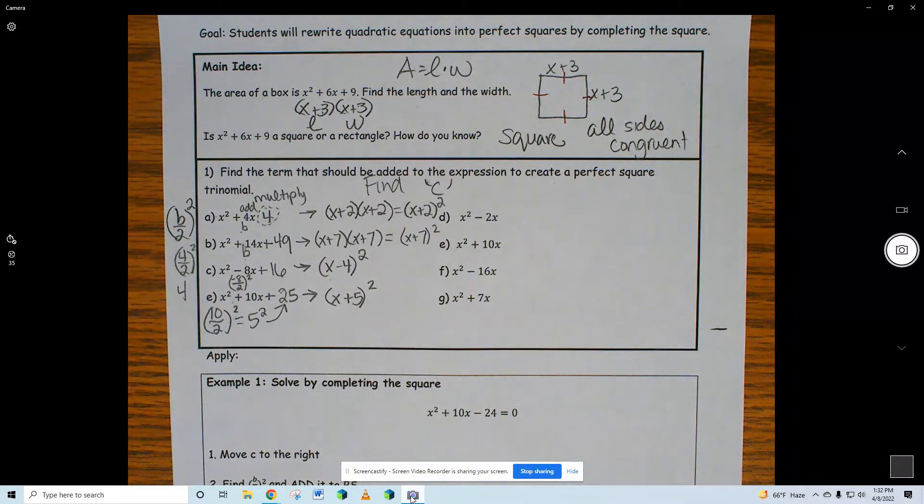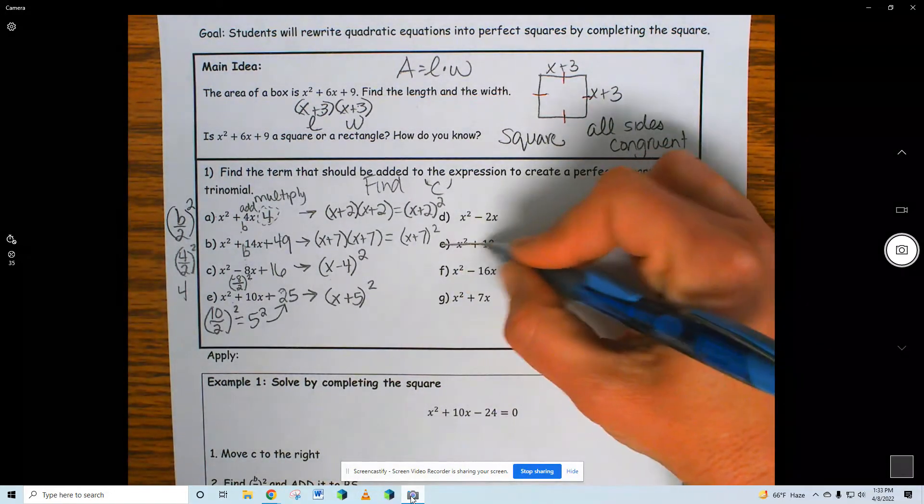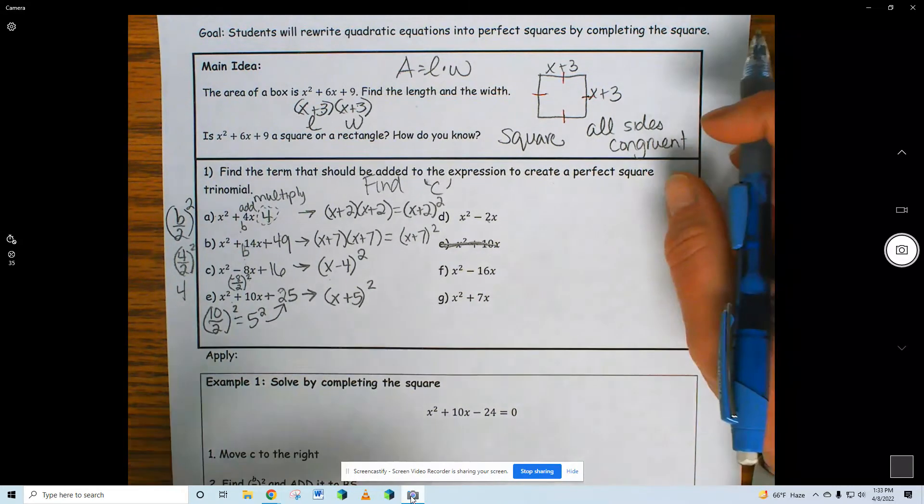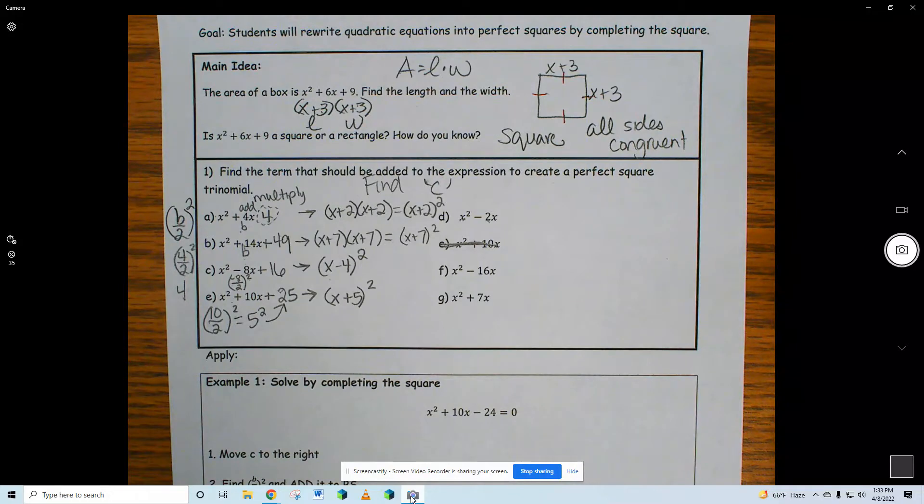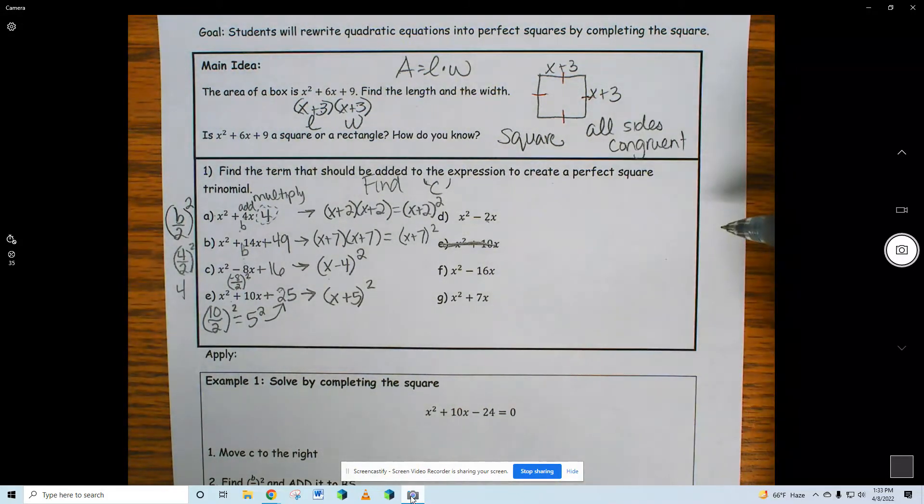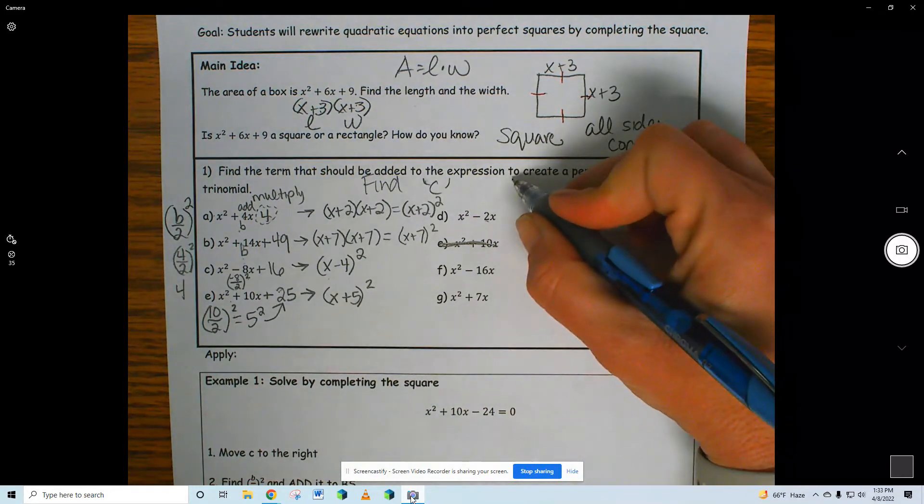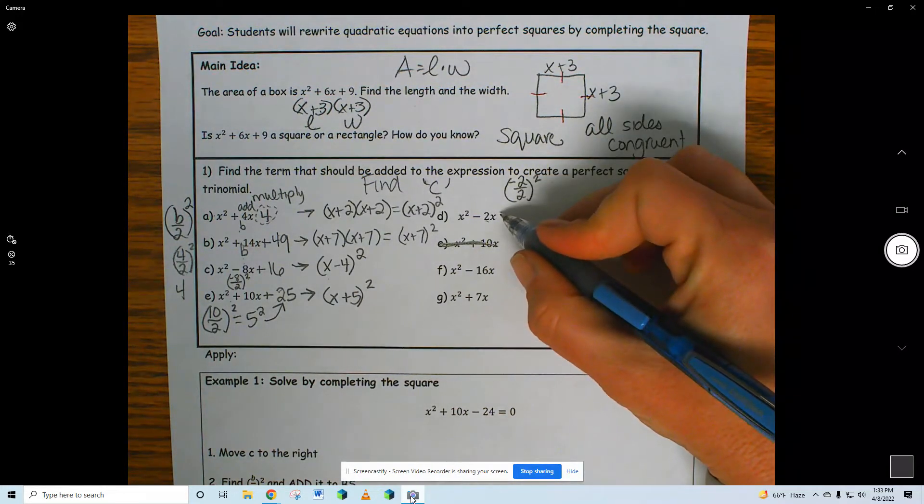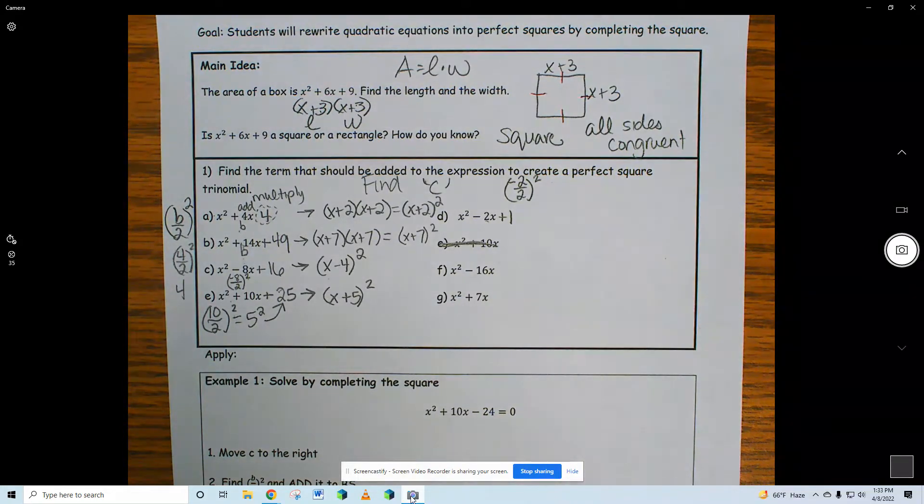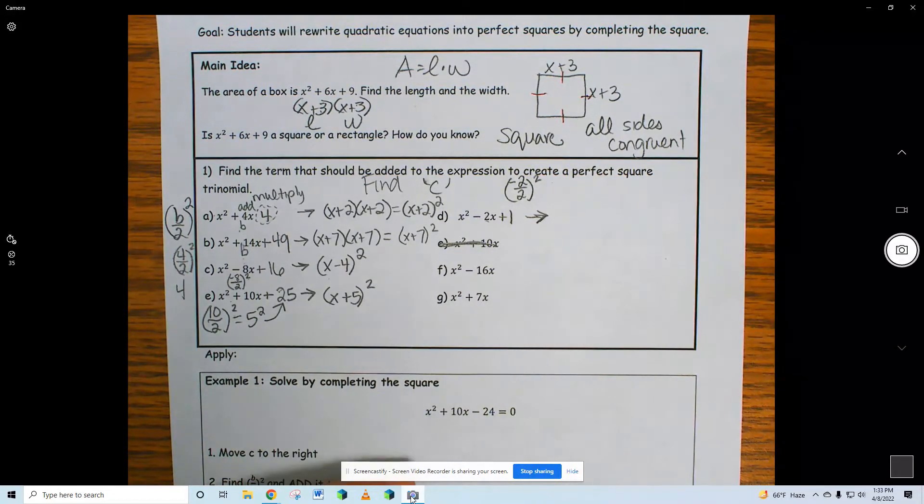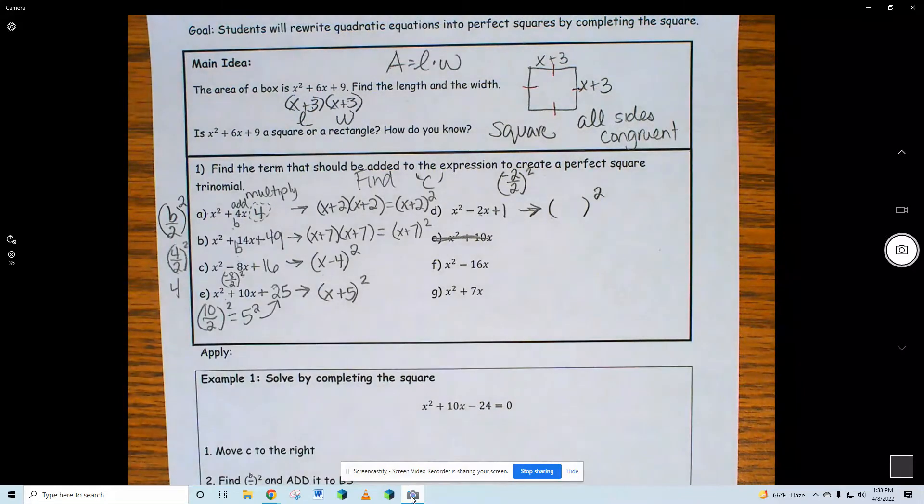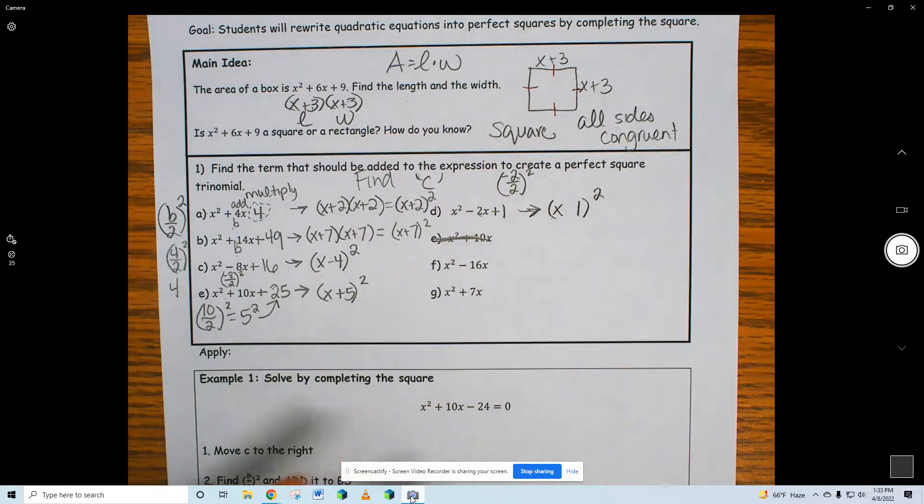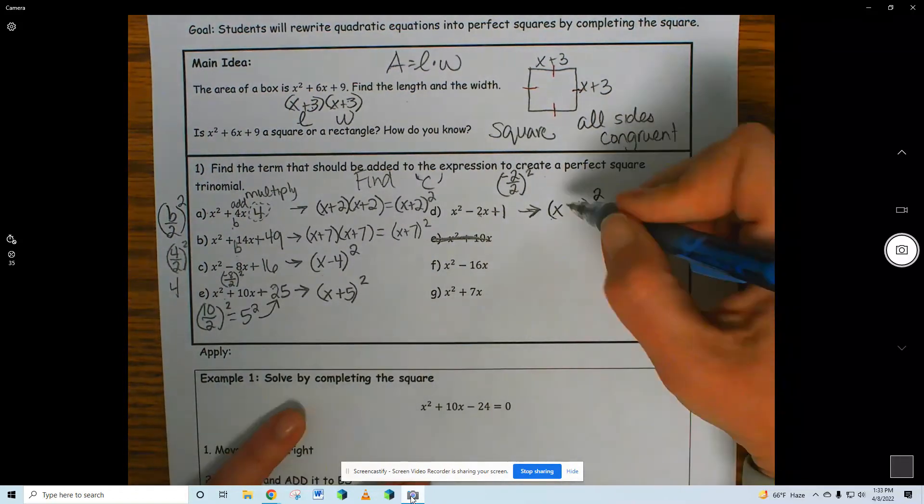E. X squared minus 2X. What's 2 cut in half? 1. Negative 2 cut in half and squared. I could just do it in my head though. And 1 times 1 is 1. What's the factored form of this perfect square trinomial? It has an X and it has a 1. What's the sign? X minus 1 squared.